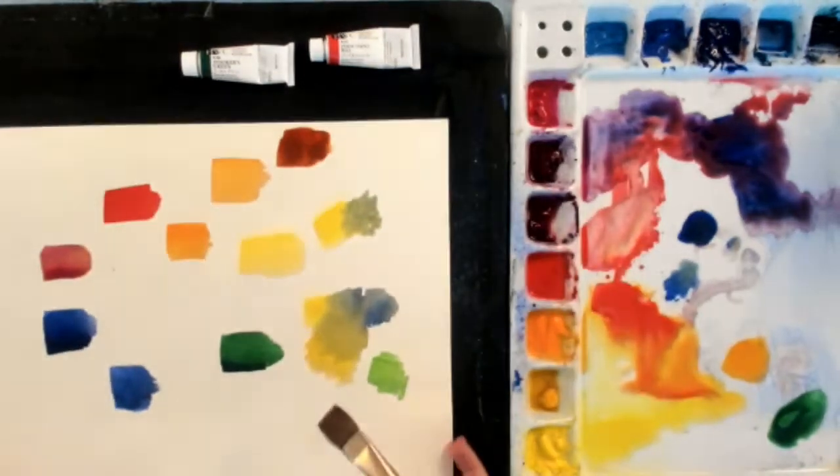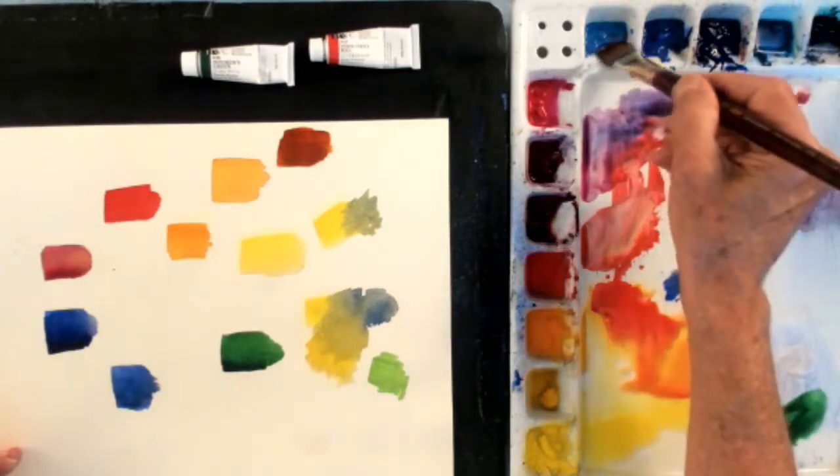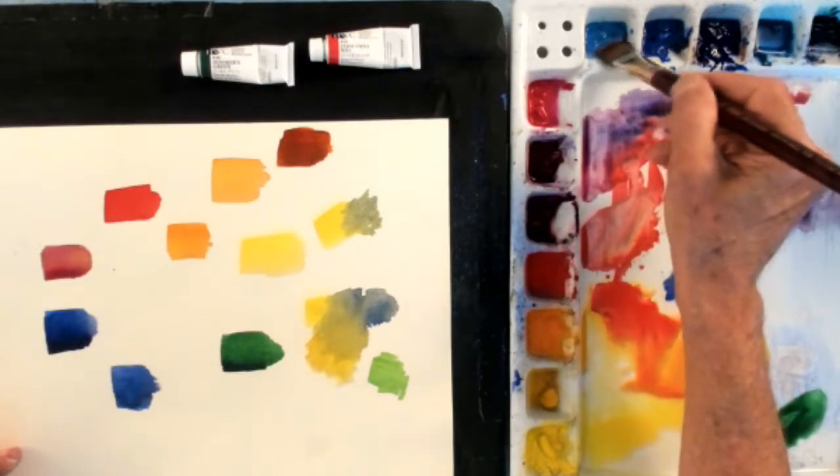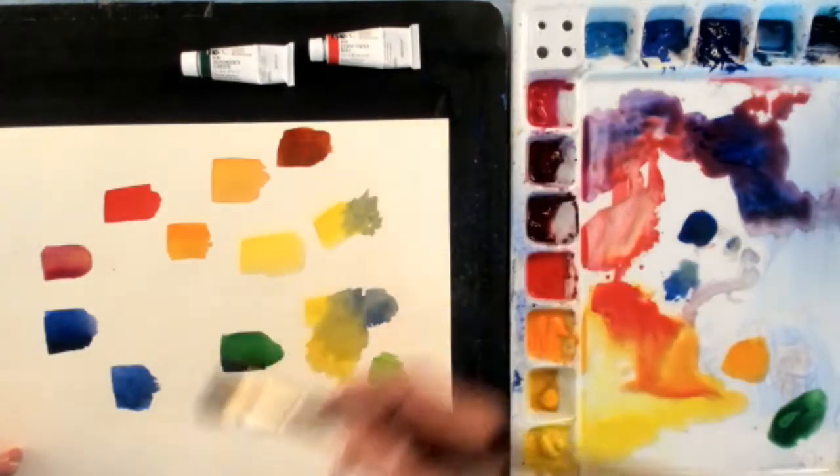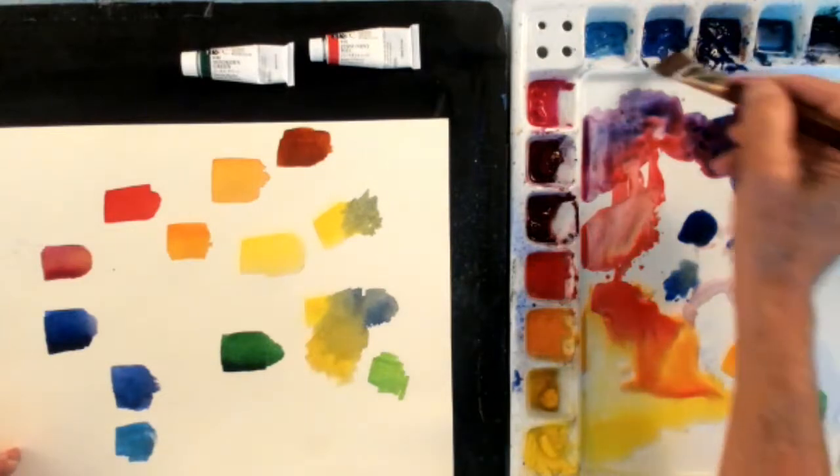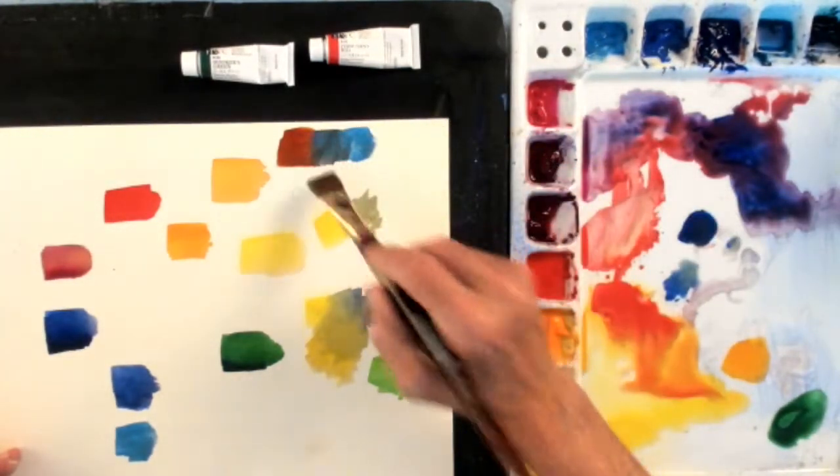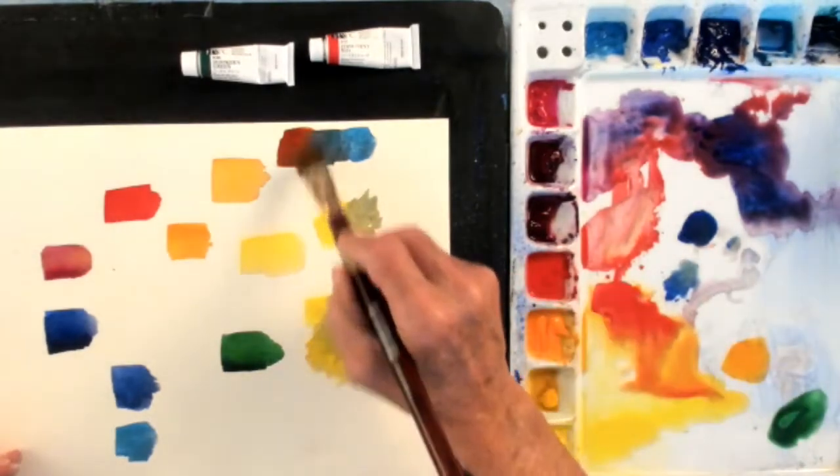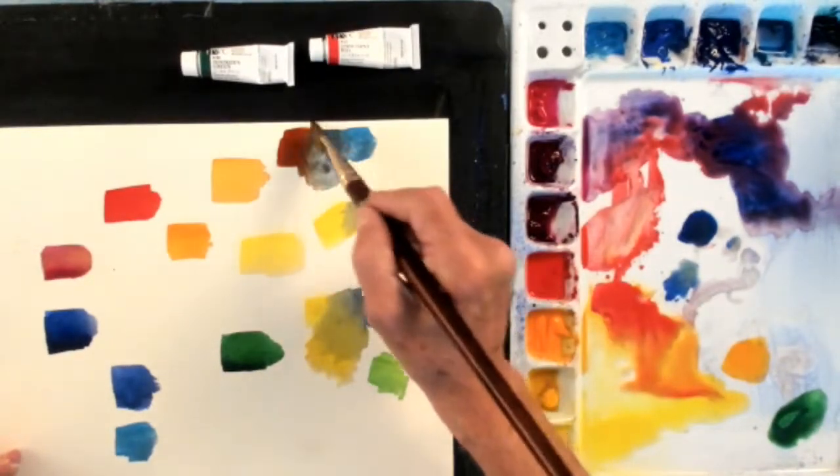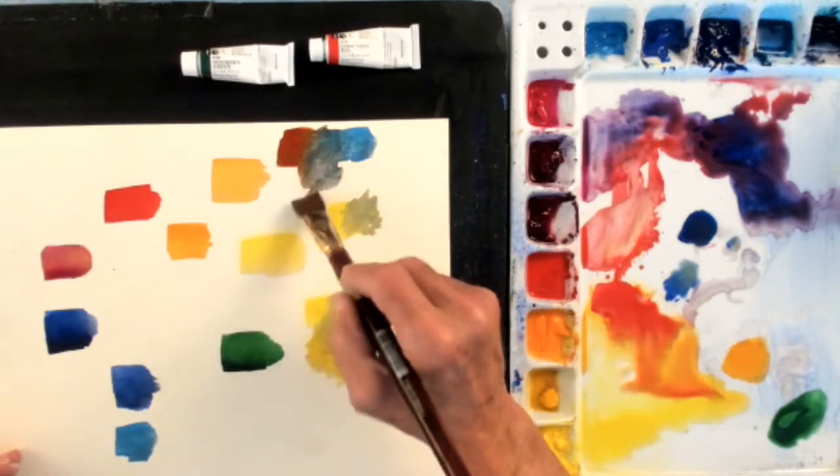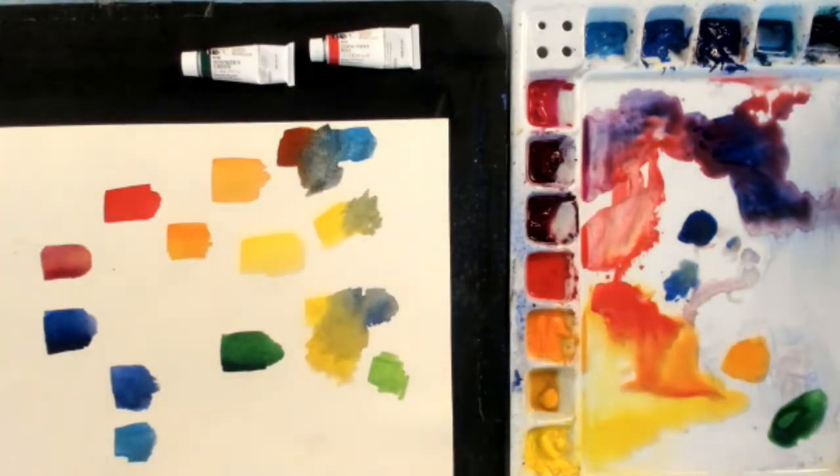But with that Burnt Sienna, I can take that and I can mix it with a blue, I can use Cerulean blue now. So I'm picking up another blue. Now that's another blue I have on my palette. And with a proper moisture, I can make a nice little gray out of that, with that Burnt Sienna. Burnt Sienna mixed with blue will give you a gray, or all kinds of grays.